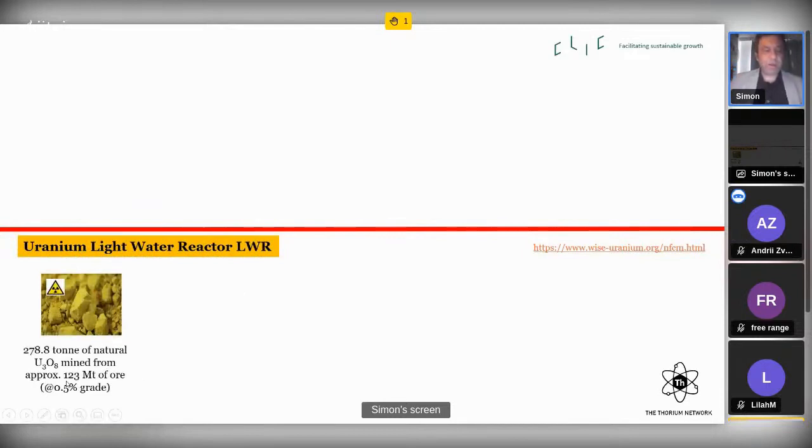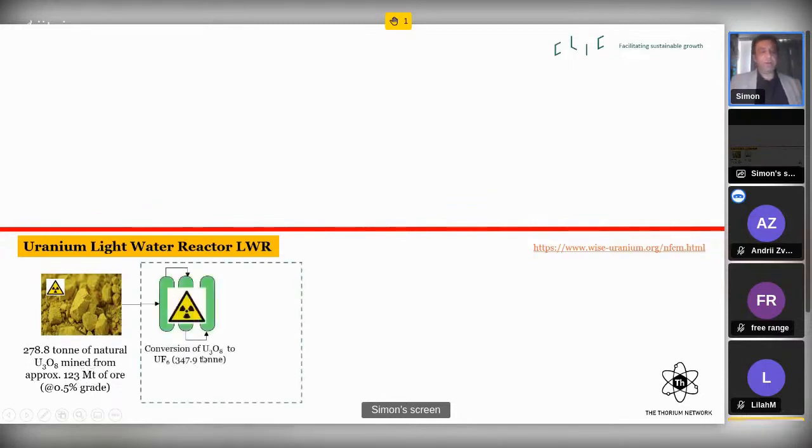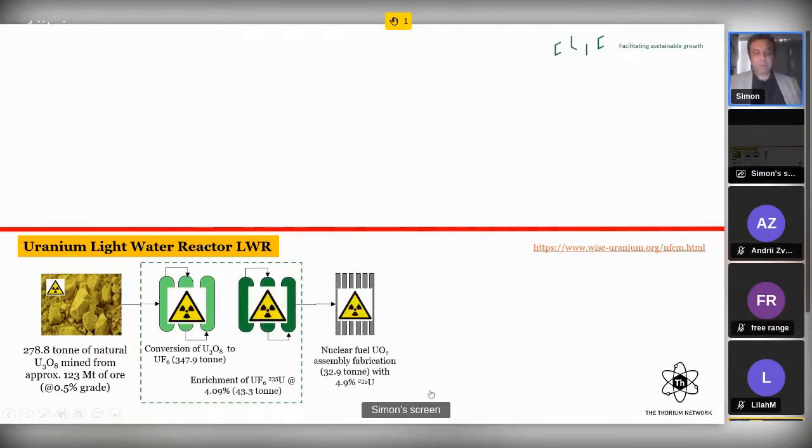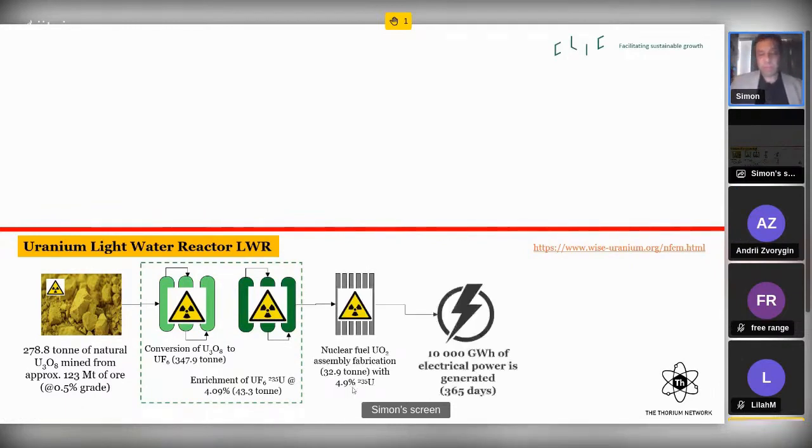We start with 123 million tonnes of ore, which we get 278 tonnes of natural uranium, yellow cake. Then we convert it, and we turn it into an enrichment. And from that, we make 32.9 tonnes of nuclear fuel assembly rods. And we generate 10,000 gigawatt hours of electrical power across a year, assuming 91% availability.